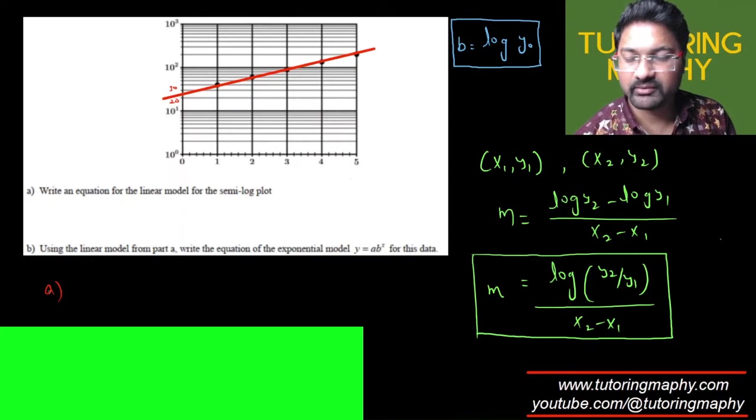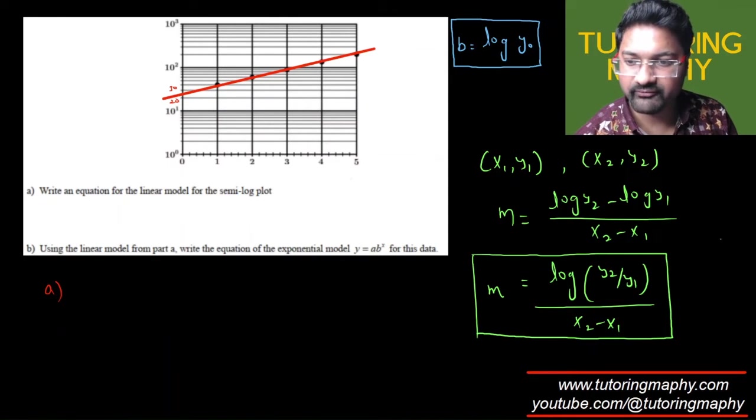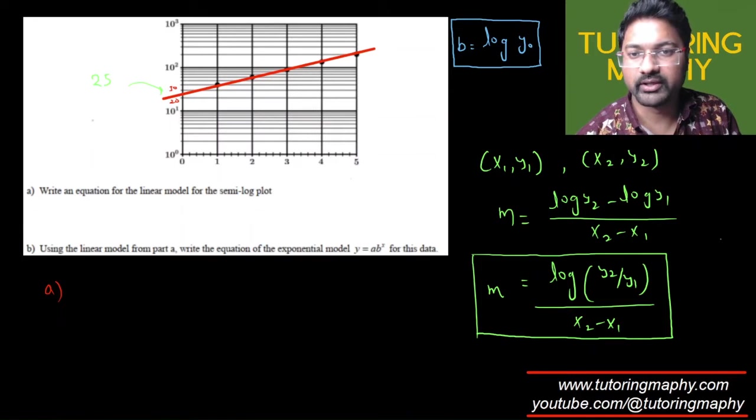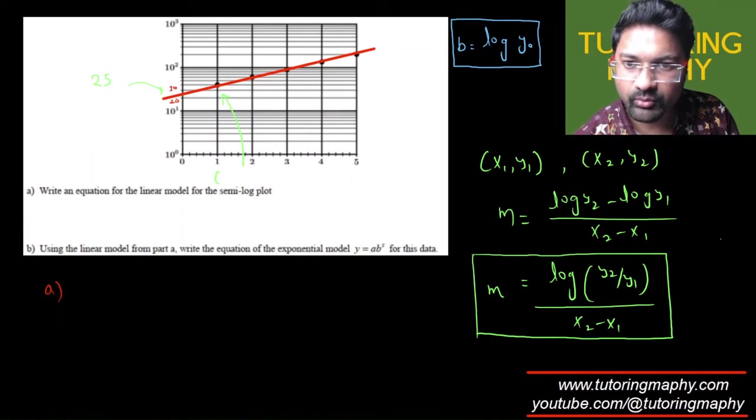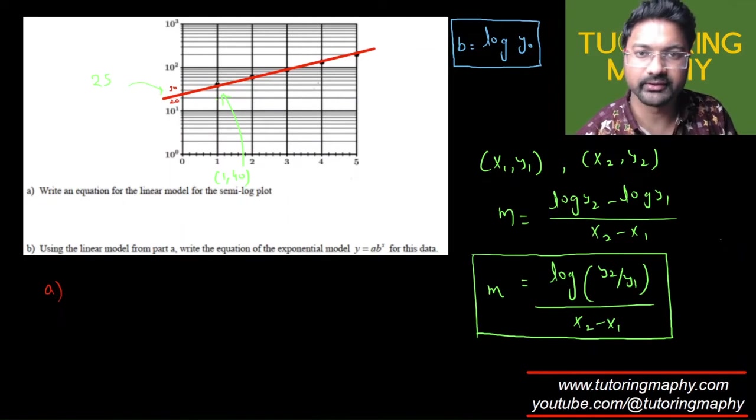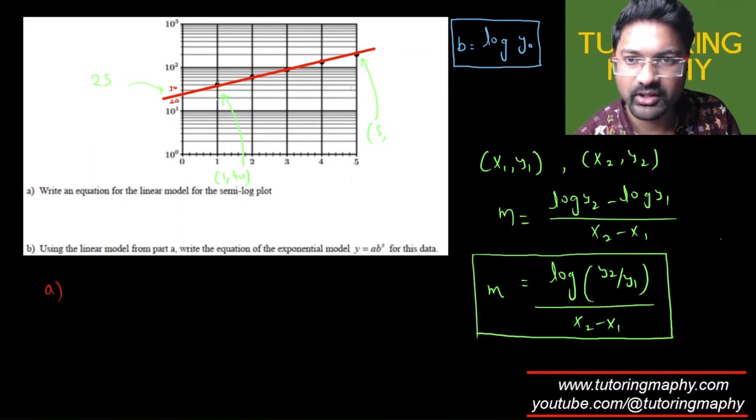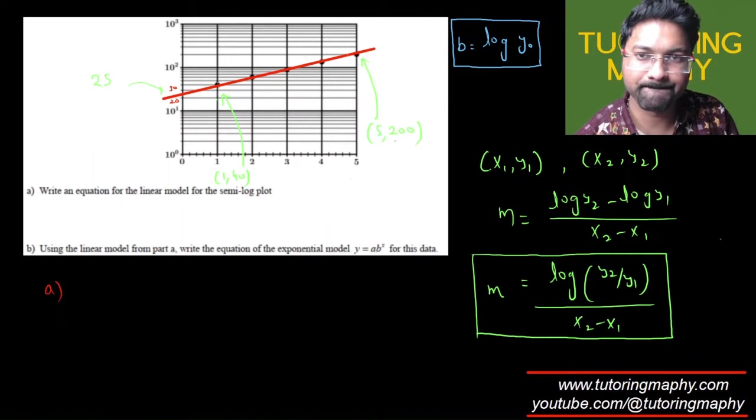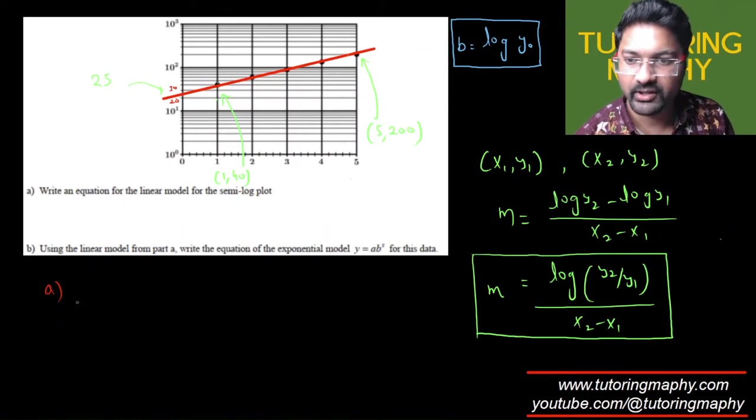So let's do that. First, we know that this point is 25, so we are sorted on the y-intercept. Let's take any two points on the curve so that we can find the slope. This point is going to look like 1 comma, I think 10, 20, 30, and 40, because this is 10, so this is 20, this is 30, and this is 40. Yeah. And this point is going to look like 5 comma, I would say this is 100, so that's going to be 200.